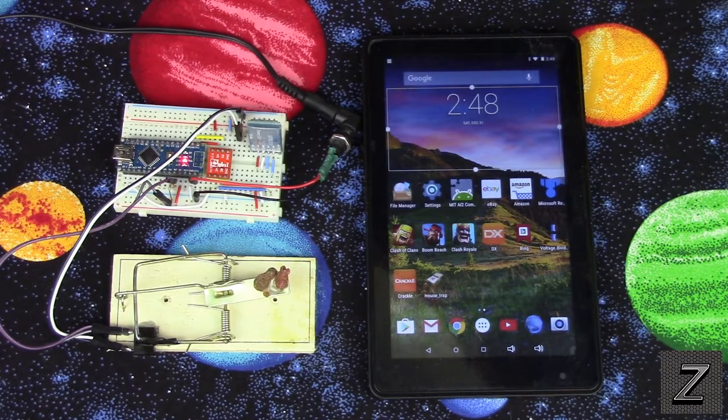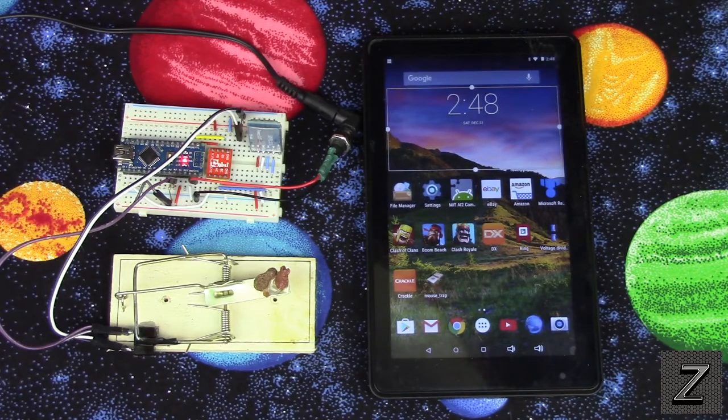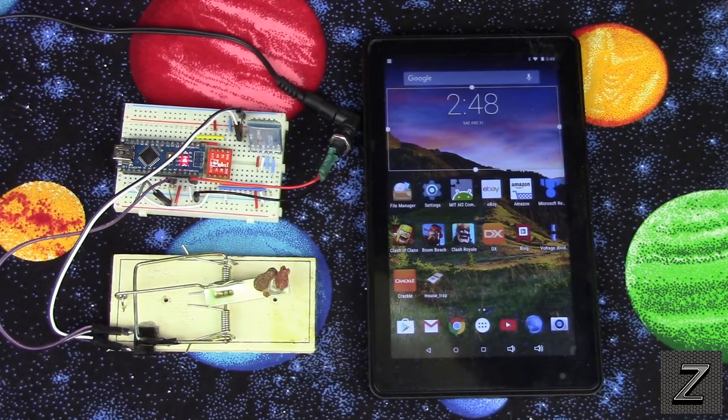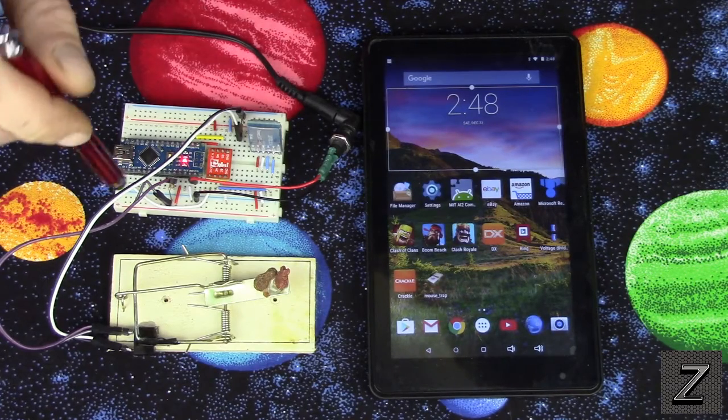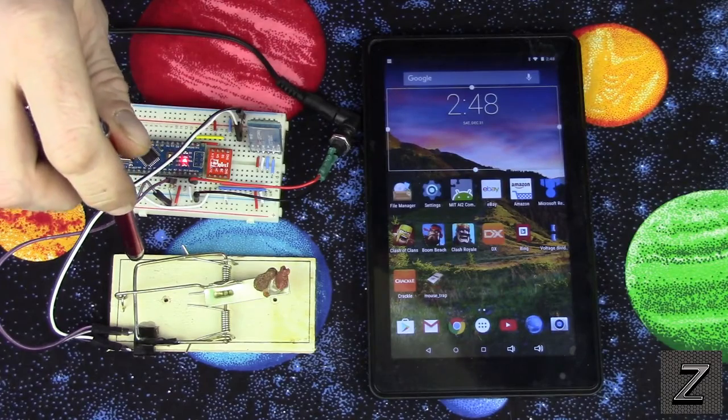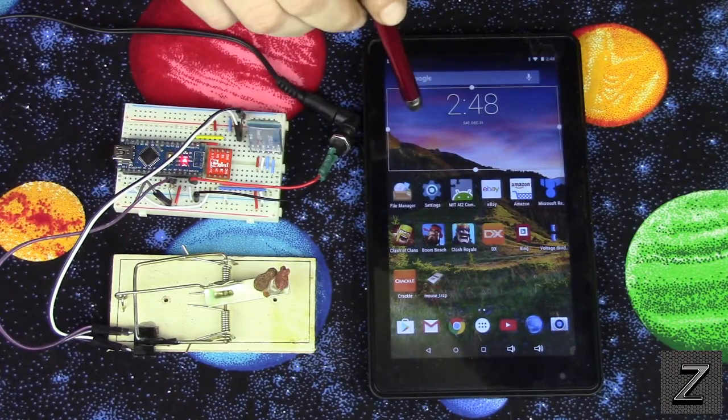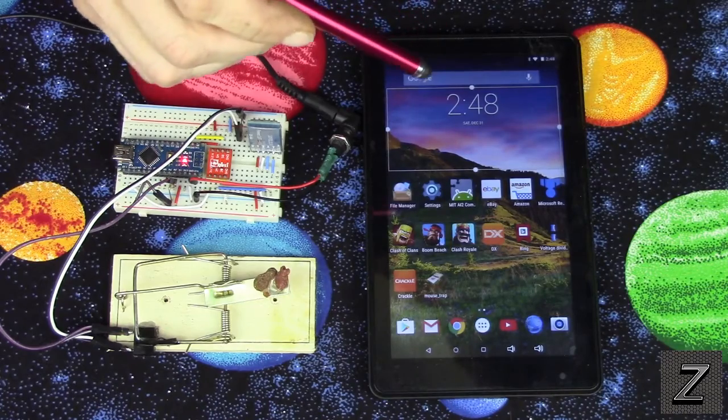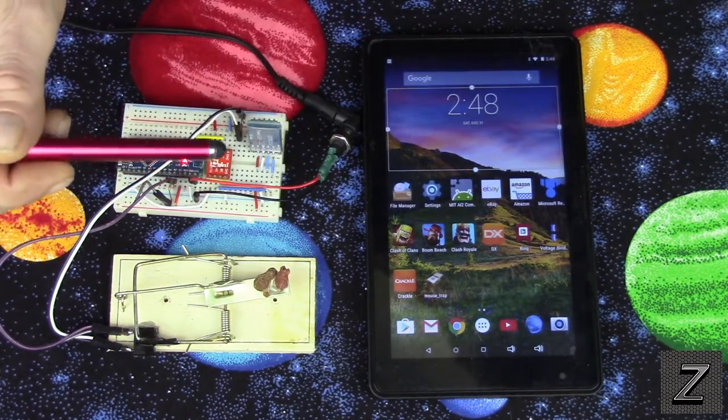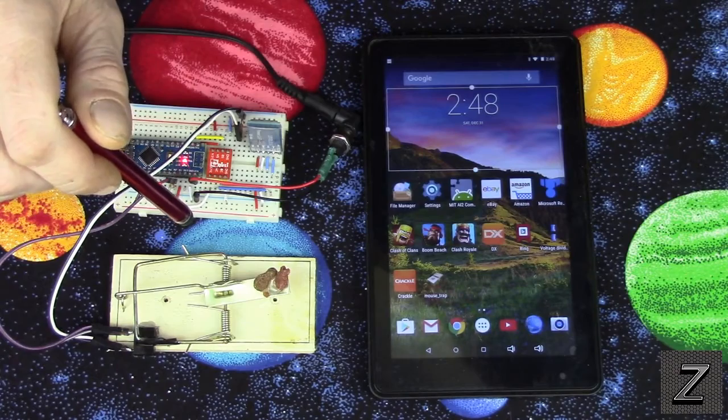Having to go out and check the traps all the time, especially being it's winter right now, is kind of annoying. By coming up with this circuit to add to the mouse trap, I can just turn on my tablet or my phone and check and see if the trap has been sprung. Most likely, I have a mouse if it's been sprung.